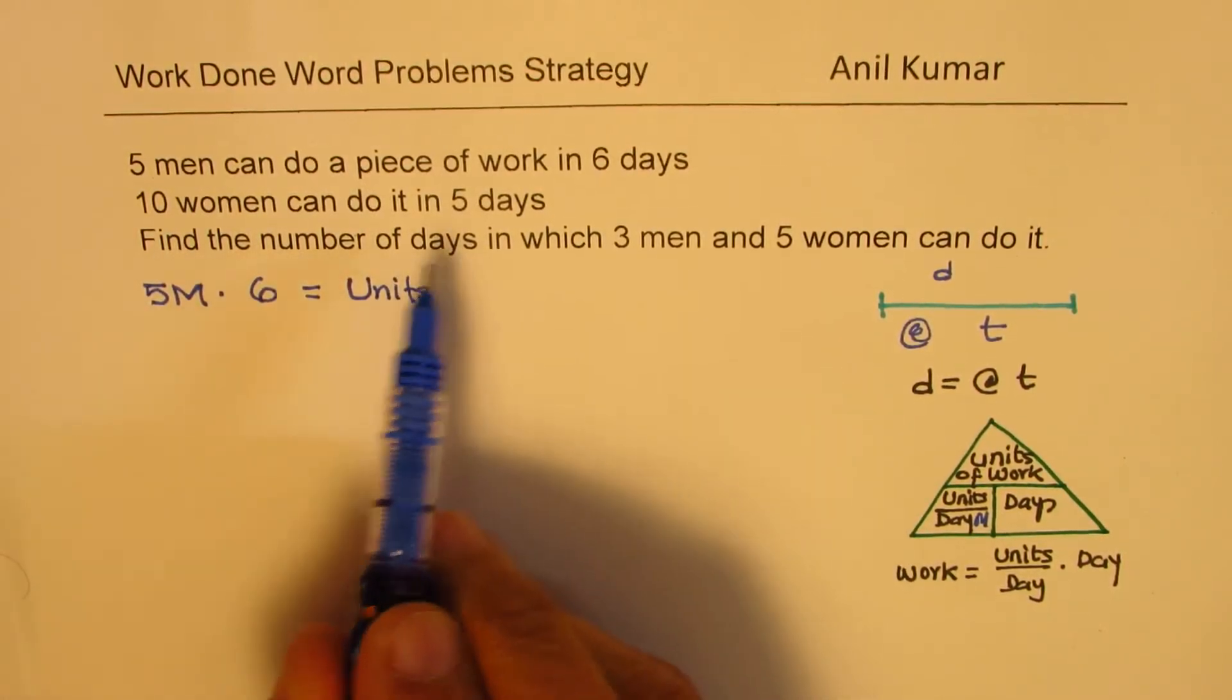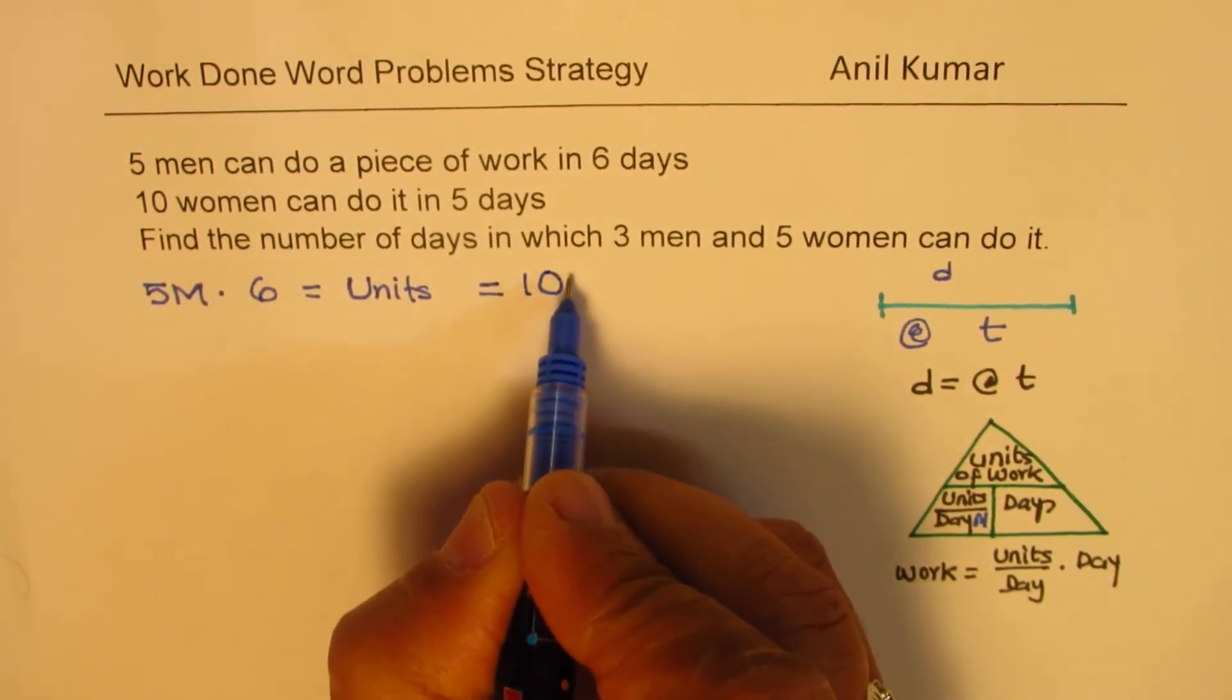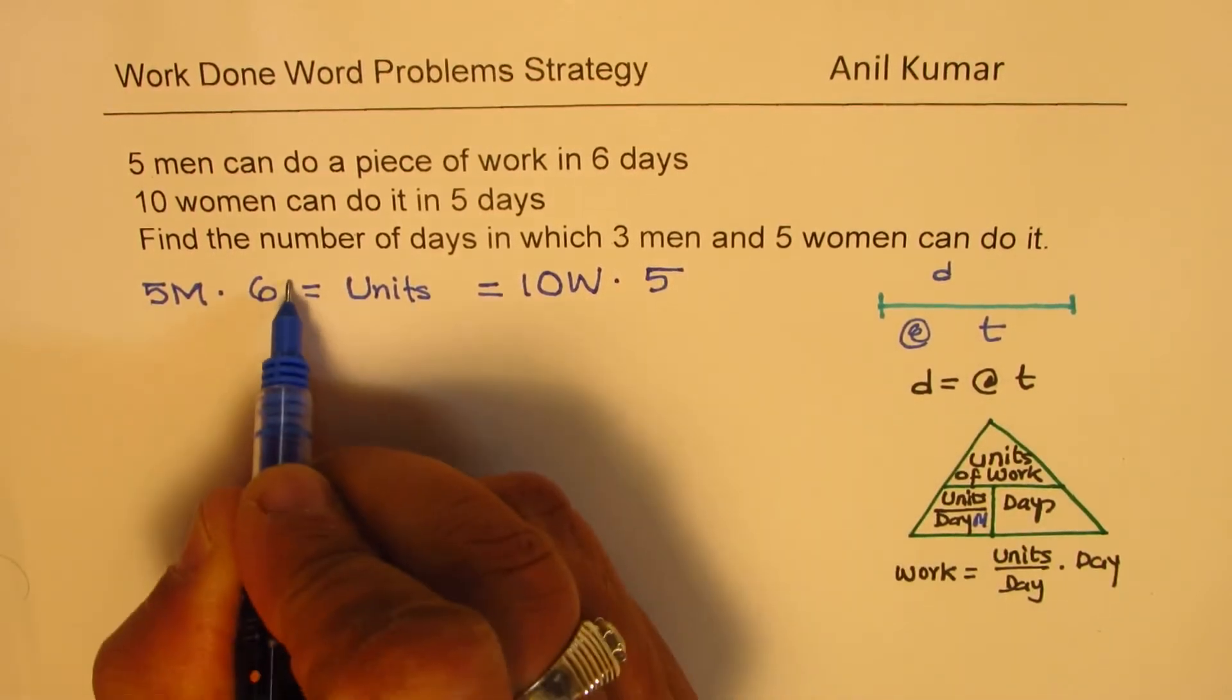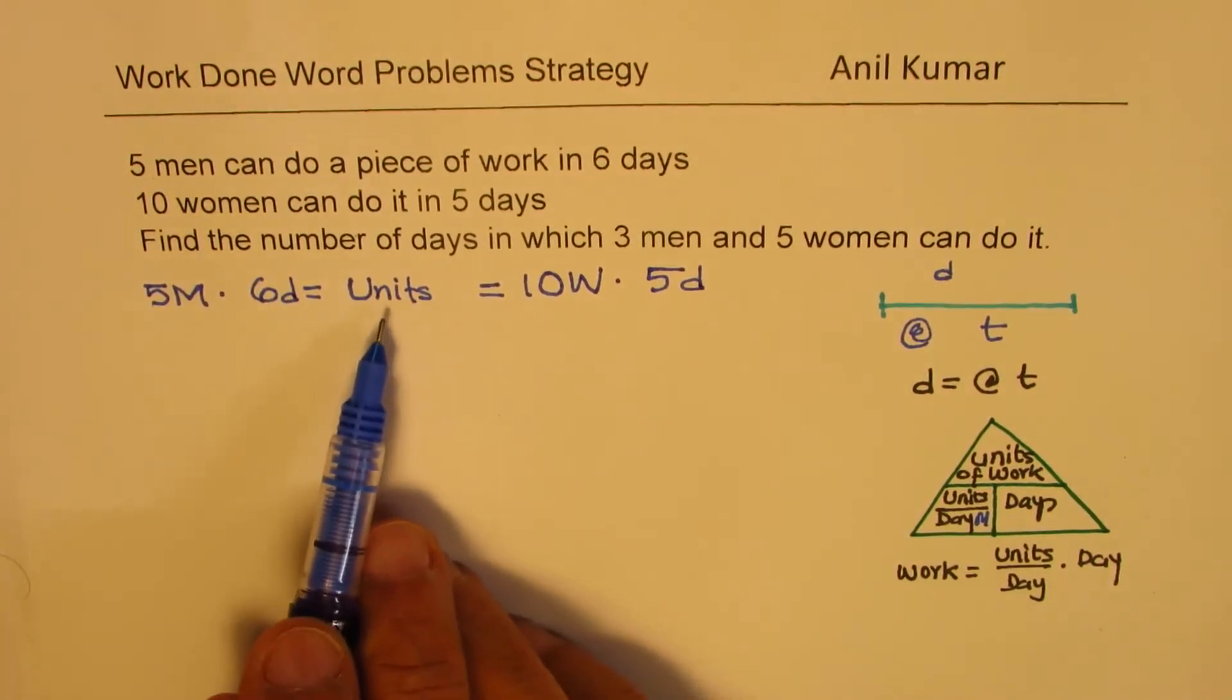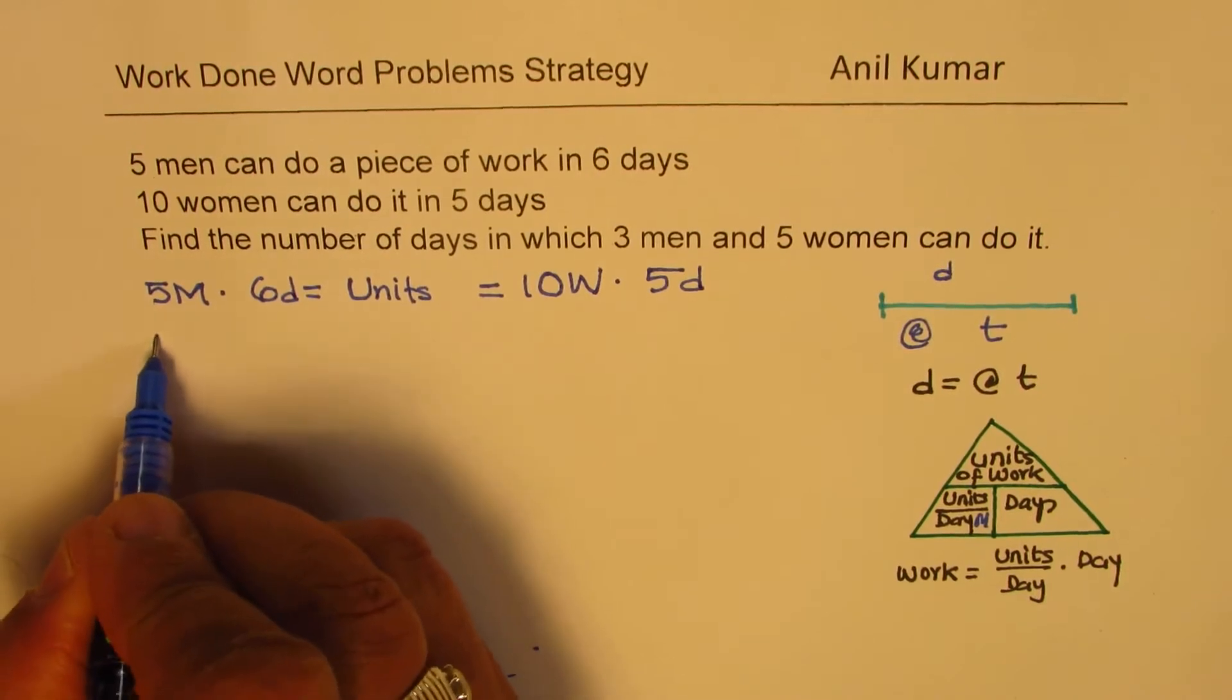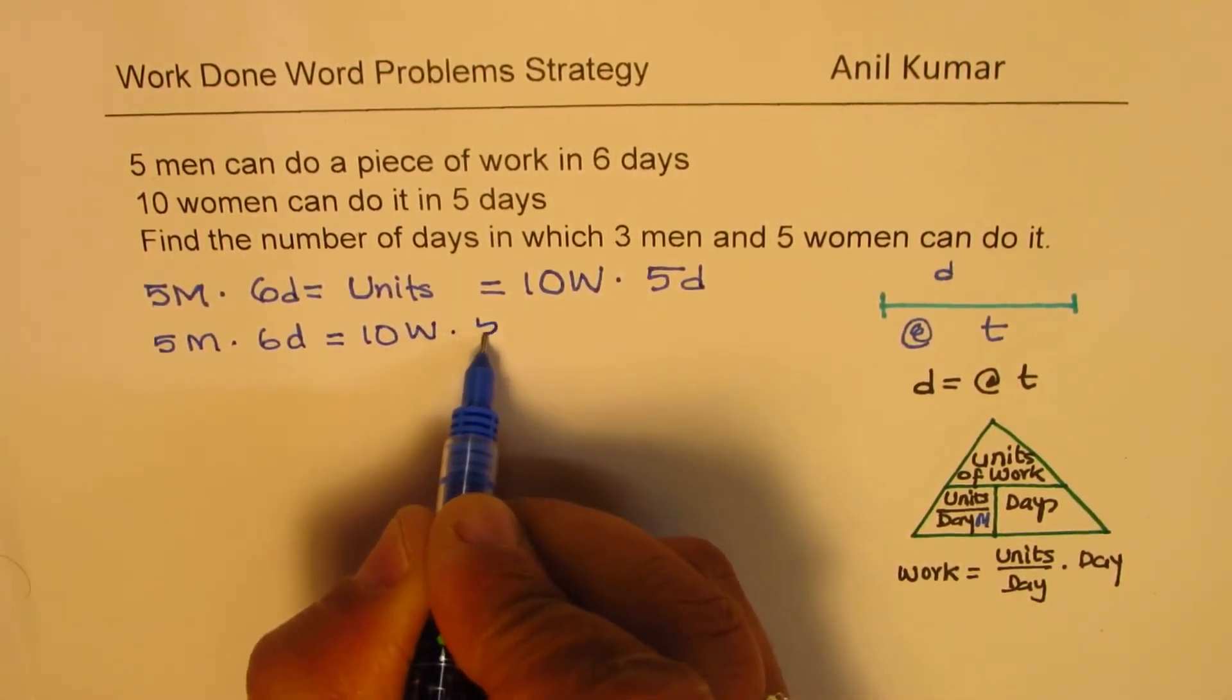Now, this total units is same for 10 women who are doing this job in five days. So, this much work is also done by 10 women. Let their rate be w. W units per day for women and times five days. So, we get an equation. Same work is being done by men and women. Five men can do it in six days, 10 women can do it in five days. So, we get our relation, which is five men times six days is equal to 10 women in five days.